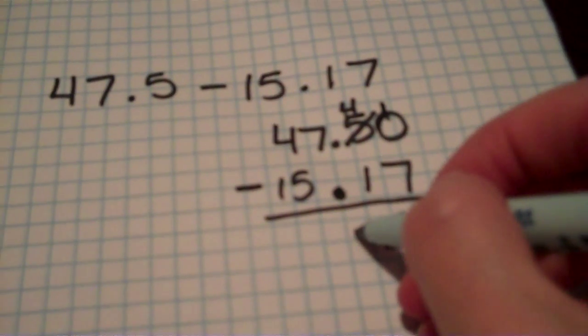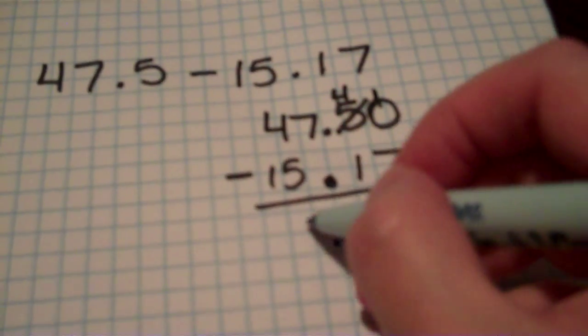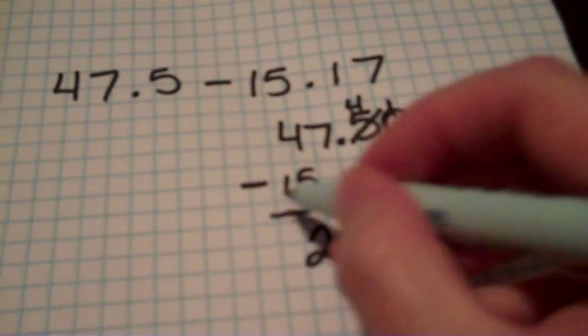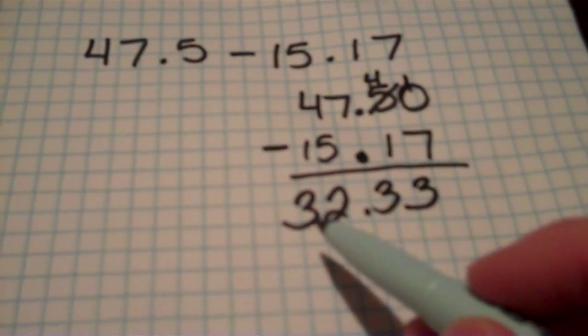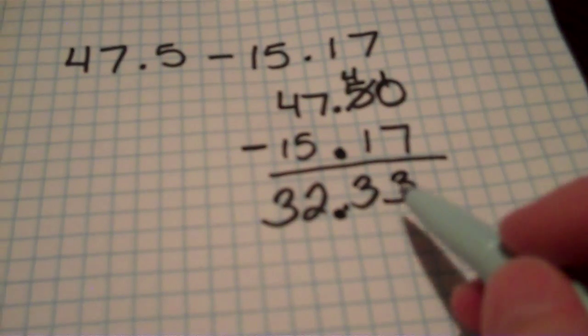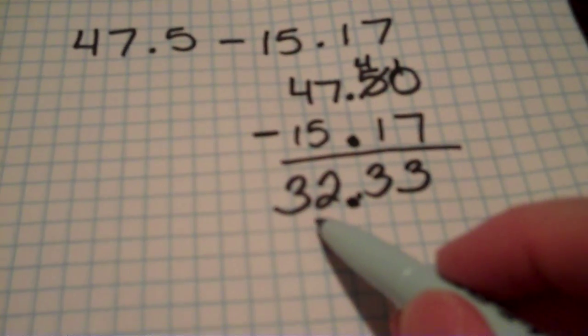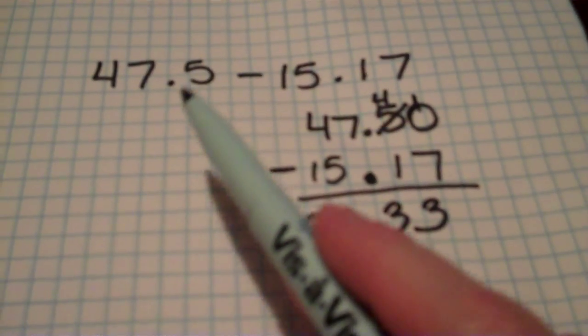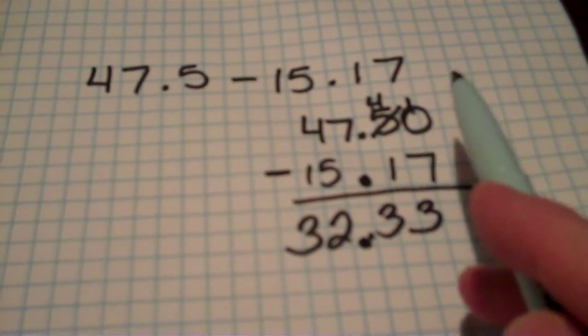4 minus 1 gives me 3. 7 minus 5 gives me 2. And 4 minus 1 gives me 3. So my answer would then be 32, and that's a decimal point. Sorry. It didn't look like it. 32 and 33 hundredths. So that would be the difference between 47 and 5 tenths minus 15 and 17 hundredths.